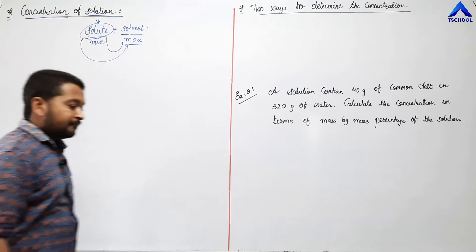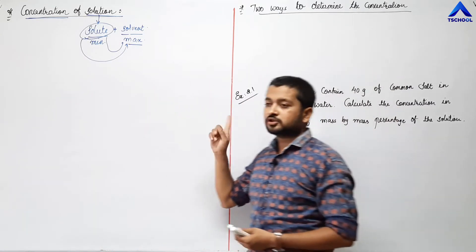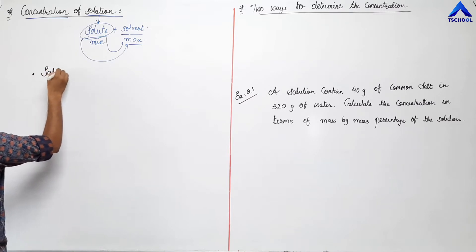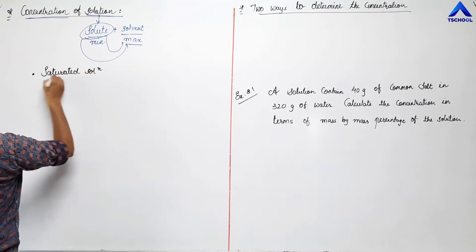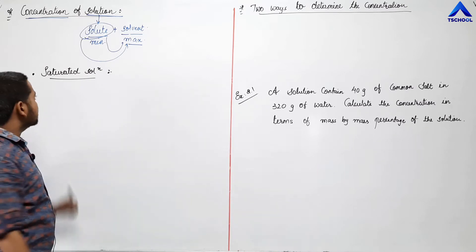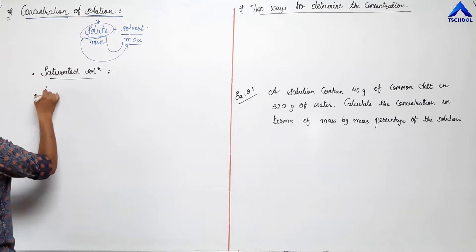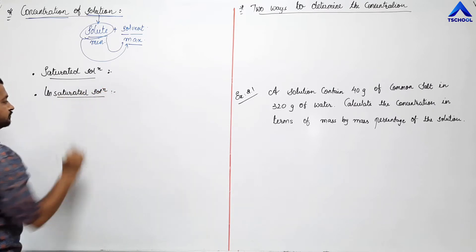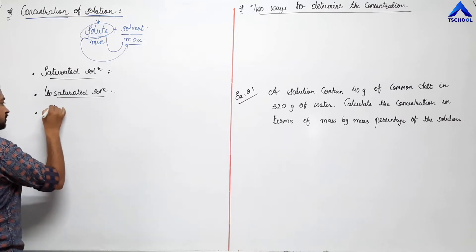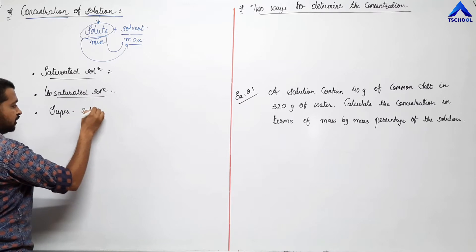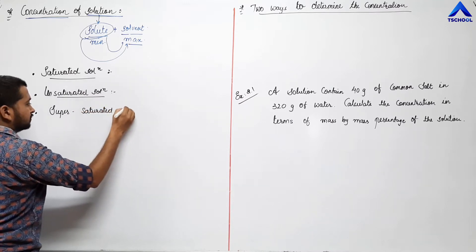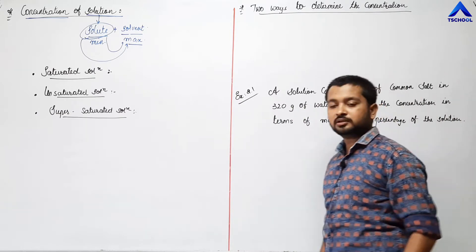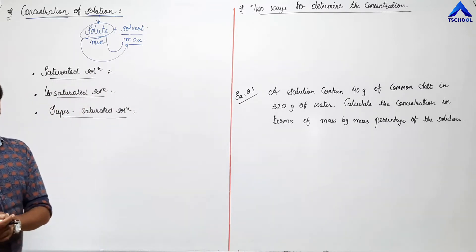Concentration of the solution is made up of three different kinds of solutions. The first one is the saturated solution, the second one is the unsaturated solution, and the third one is the supersaturated solution.